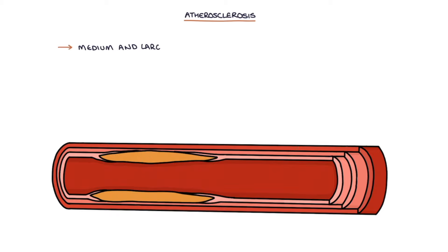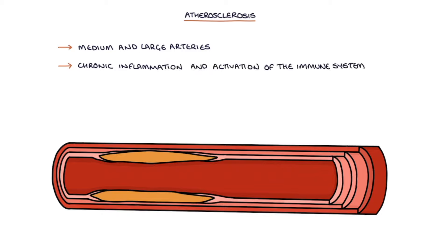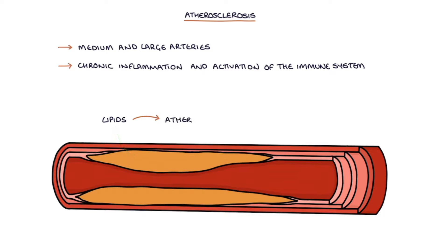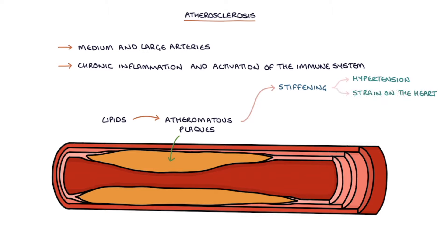Atherosclerosis affects the medium and large arteries. It's caused by chronic inflammation and activation of the immune system in the artery wall. Lipids are deposited in the artery wall, followed by the development of fibrous atheromatous plaques. These plaques cause stiffening of the artery walls, leading to hypertension, or raised blood pressure, and strain on the heart whilst it tries to pump blood against increased resistance.